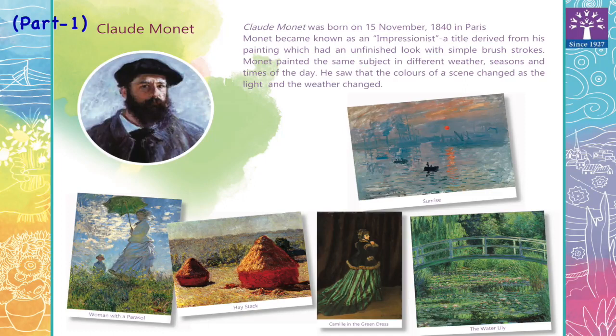Monet painted the same subject in different weathers, seasons, and times of the day. He saw that the colors of a scene changed as the light and the weather changed.